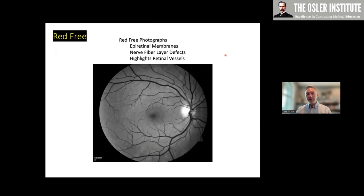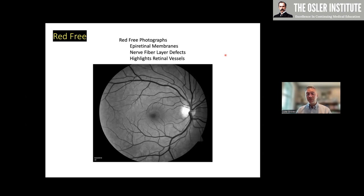A follow-up way to do photographs is red-free imaging, which can help you differentiate a few differentials. Specifically, you might be able to pick out an epiretinal membrane on a red-free photo, look for nerve fiber layer defects, or highlight differences in the retinal vessels. With red-free images, your optic nerve is bright — compared to fundus autofluorescence, which people sometimes confuse on oral boards. With fundus autofluorescence, your optic nerve should be dark unless there's pathology like optic disc drusen causing hyperfluorescence.